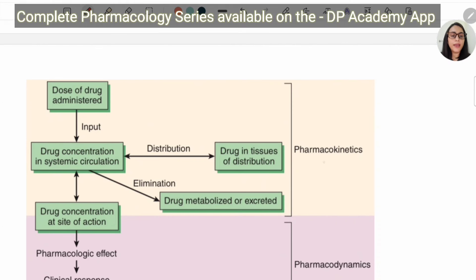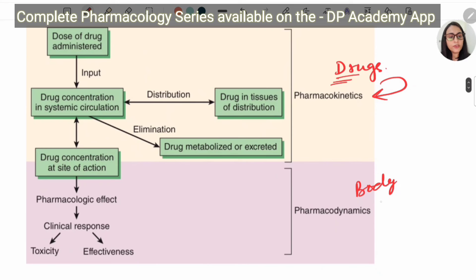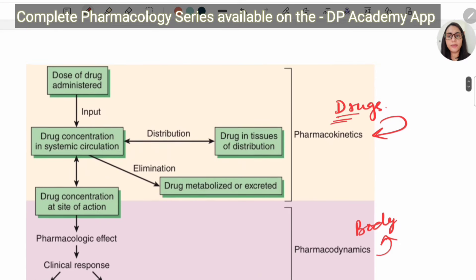When I say pharmacokinetics, we are talking about the drugs. When I say pharmacodynamics, we are talking about the body. So the effect of the body on the drug is pharmacokinetics, and the effect of the drug on the body is known as pharmacodynamics.